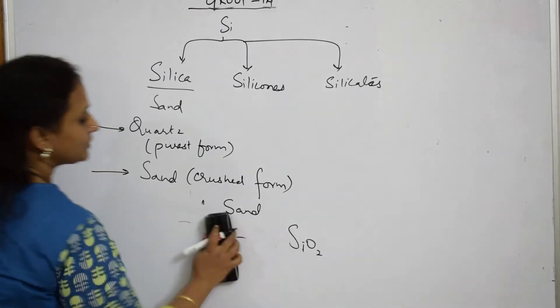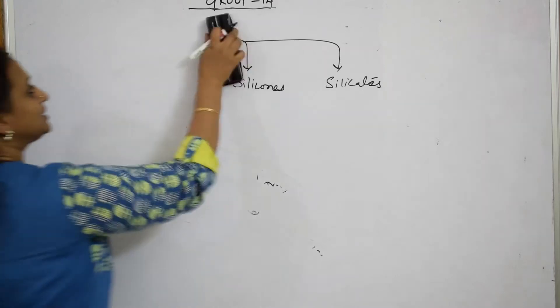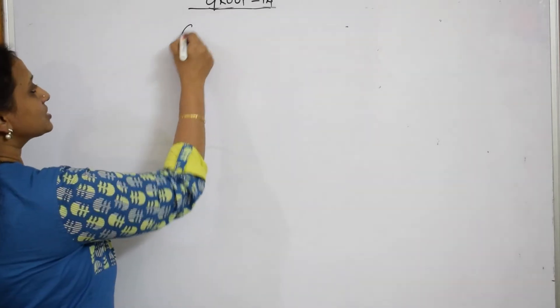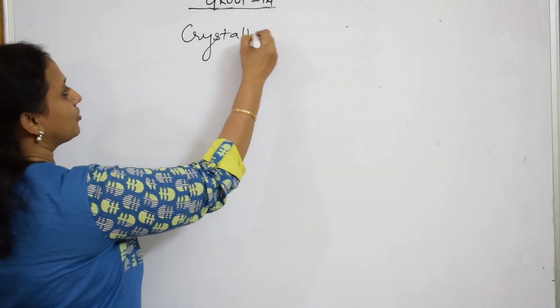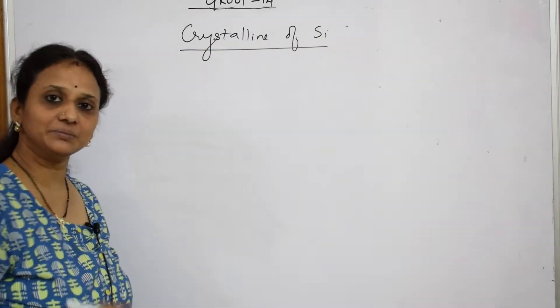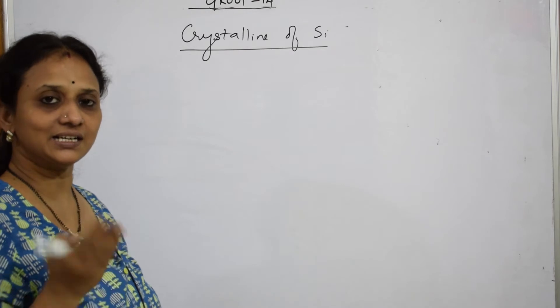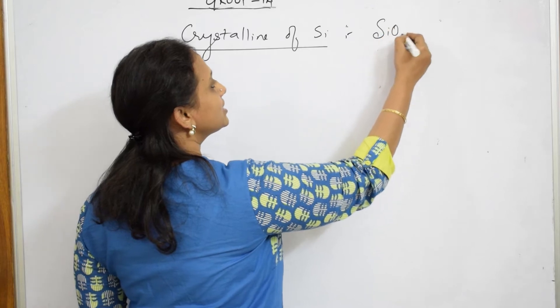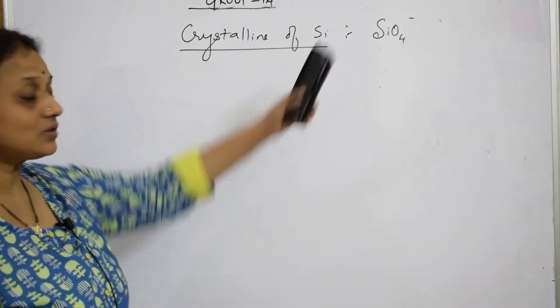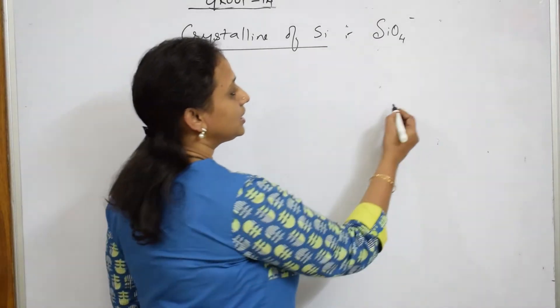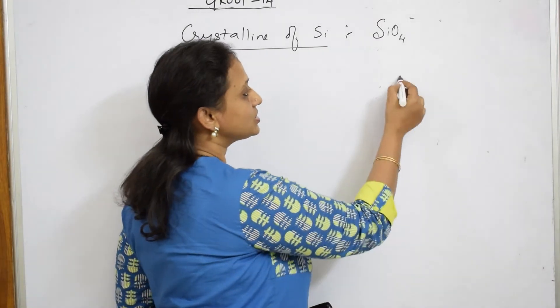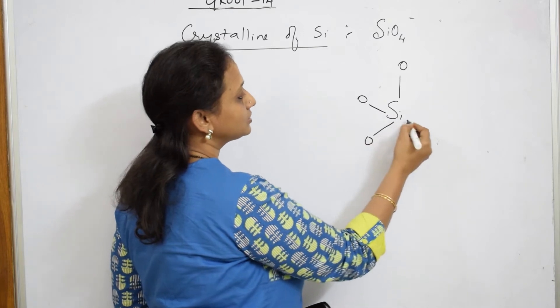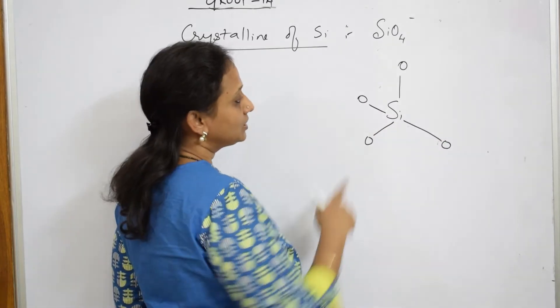Let us come back and start with the structures. When I speak about a silica structure, we're going to study the crystalline structure of silica. Crystalline structure of silica means basically it is nothing but a silicate. As I said, silica, silicones, and silicates. We want to draw the crystalline structure of silicate, that is SiO4 unit. Now how does this look? This has a three-dimensional structure. You have a silicon in the center, one oxygen atom above, one is pointing towards the inner side of the board, one here.